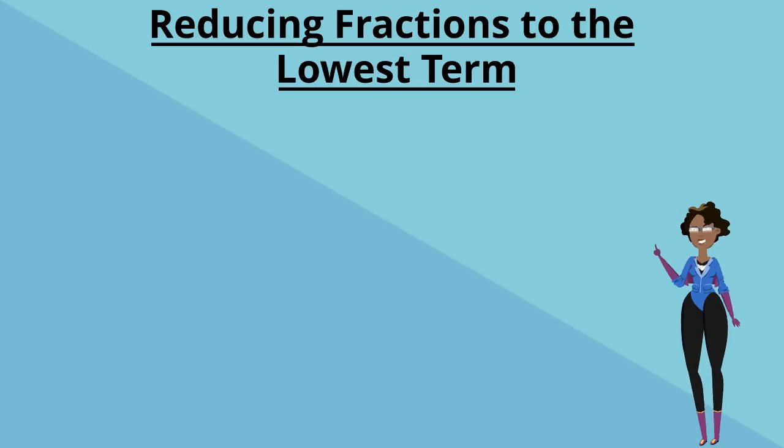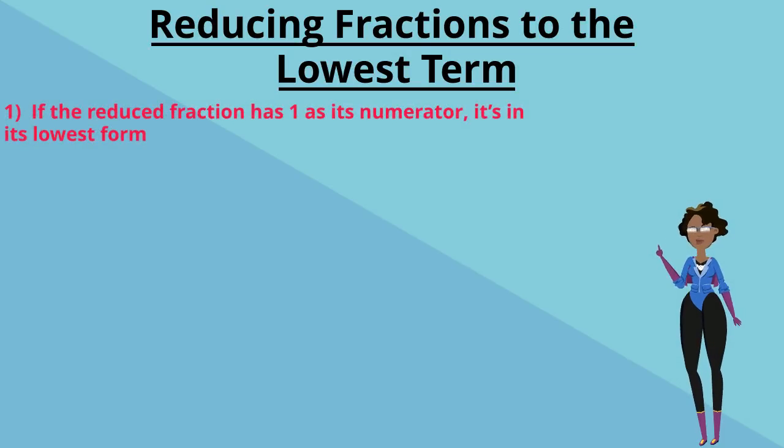Before you go, here are two tips to help you in reducing fractions to the lowest term. Our first tip. If the reduced fraction has 1 as its numerator, it's already in its lowest form. For example, one-sixth.